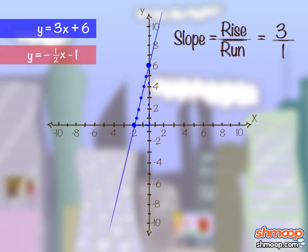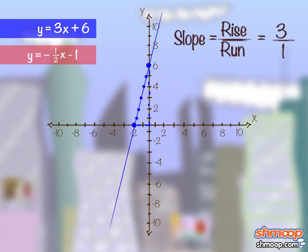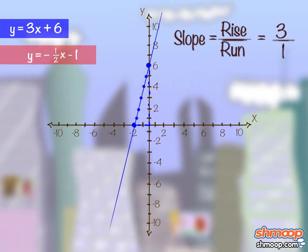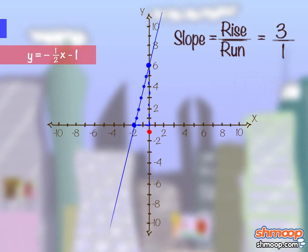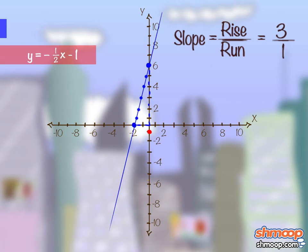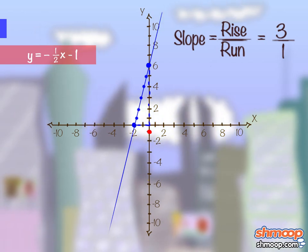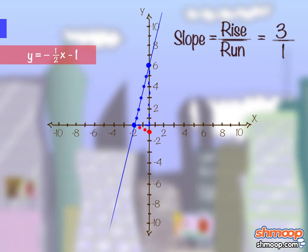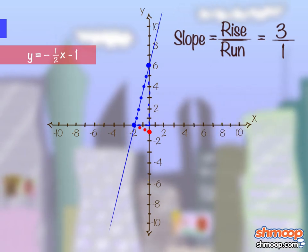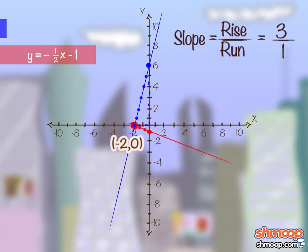We'll do the second equation in red. The y-intercept is negative 1, so we can plot a point at 0, negative 1 on the y-axis. For every one we run, or move right along the x-axis, we'll move one-half down. Flipping that, we'll move one-half up for every one we move left on the x-axis. This line, too, intersects the x-axis at negative 2, 0.